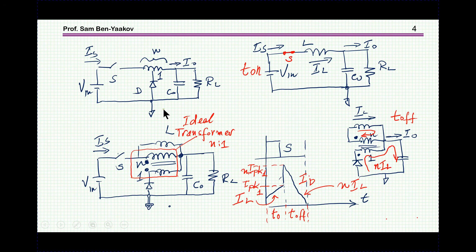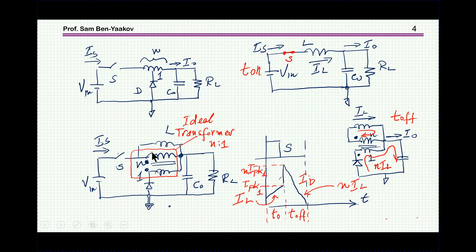This is the basic configuration of a tapped inductor buck. We see that the diode is not connected at the end but rather at a tap within the inductor — this is in fact an auto-transformer. The most intuitive approach is to express this connection as a regular two-winding transformer, N to 1, where N is the total turns and 1 is the tapped portion. I'm also showing the inductance of this configuration, giving the generic representation.